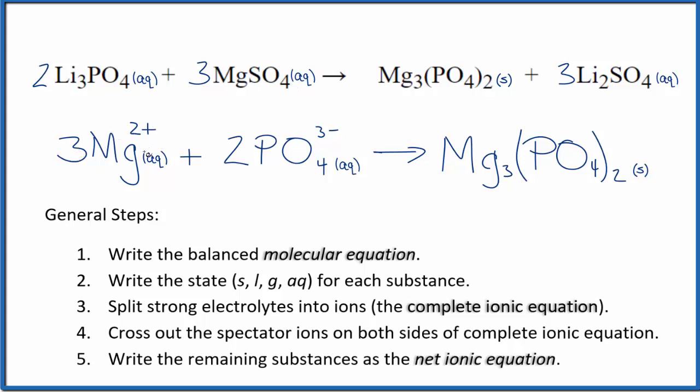You'll see that charge is balanced. We have three times two plus, that's six plus, and here we have two times three minus, that's six minus. So the net charge here is zero and this is a neutral compound. Charge is conserved.